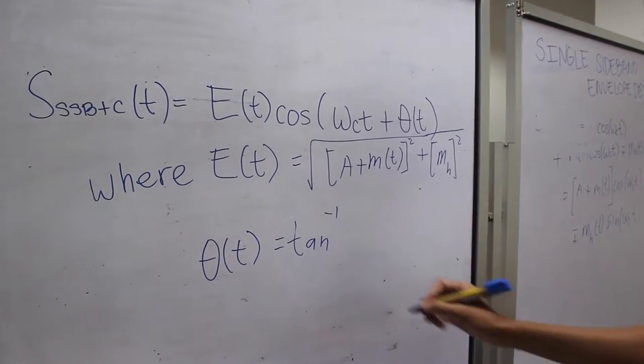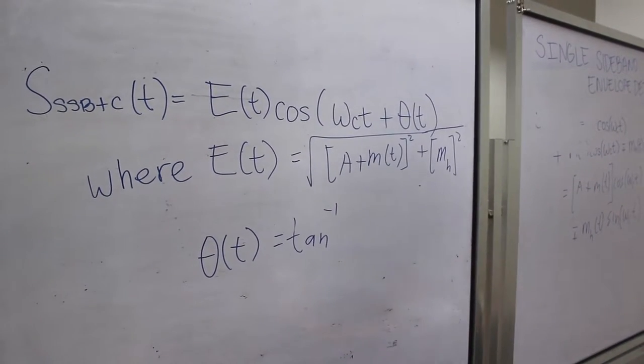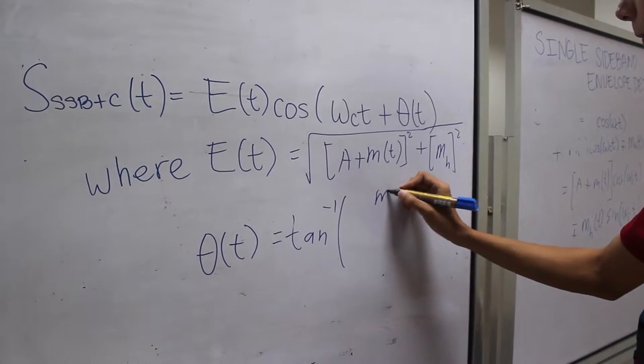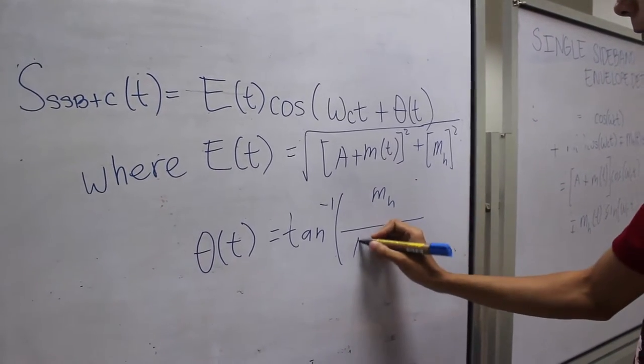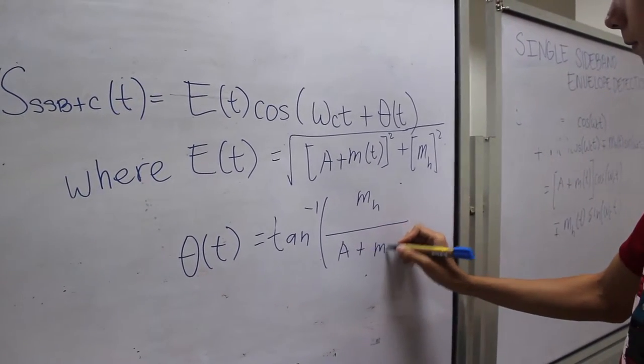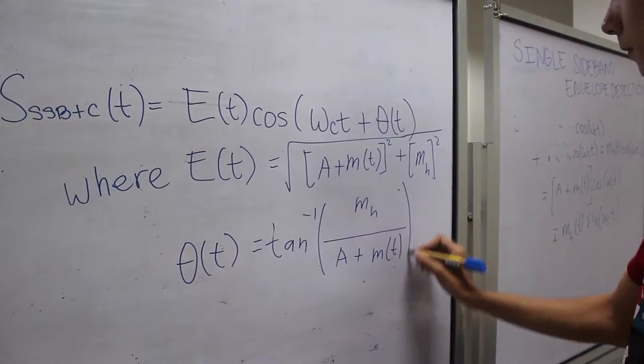The phase shift is given by the arc tangent of the ratio of the magnitude of the Hilbert Transform of the modulating signal and the sum of the amplitudes of the carrier and the modulating signal.